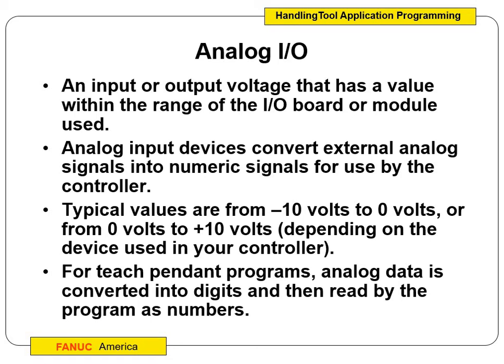Analog signals are an input or output voltage that has a value — the range of the I/O board module. That's how we use analog signals: they convert external analog signals into numeric signals for use. It's kind of like using the signal voltage to do our controls. The values can vary from negative 10 to zero, or zero to 10. So 8.75 might mean something, or 6.25. Remember, analog is more precise — it's not necessarily an on or an off. For teach pendant programs, analog data is converted into digits and then read to the program as numbers.